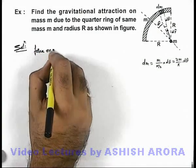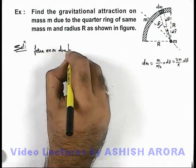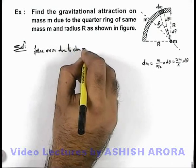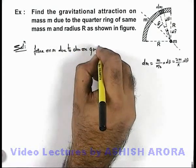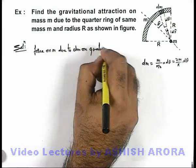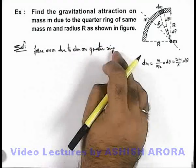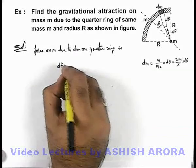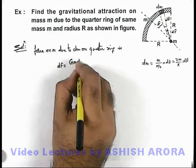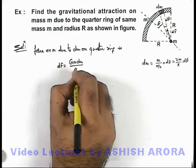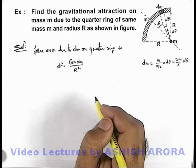So here we can write force on small m due to dm on quarter ring. This dF we can simply write as Gm·dm/R² by using Newton's law of gravitation.